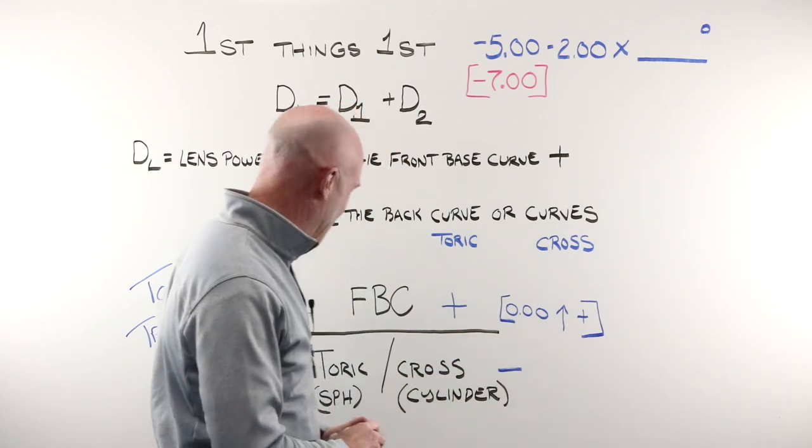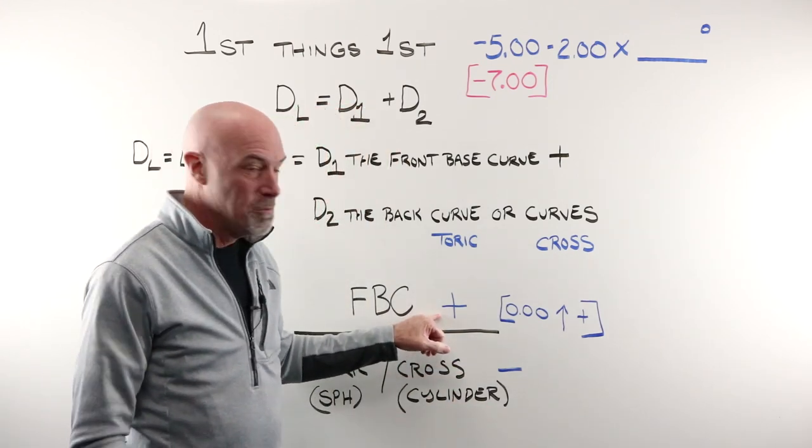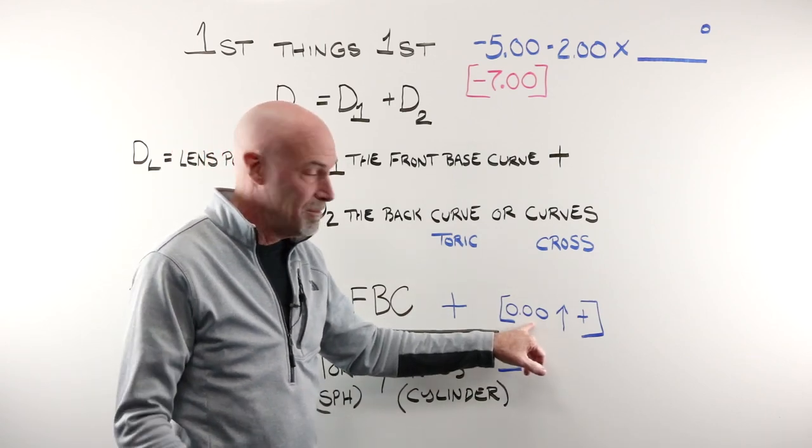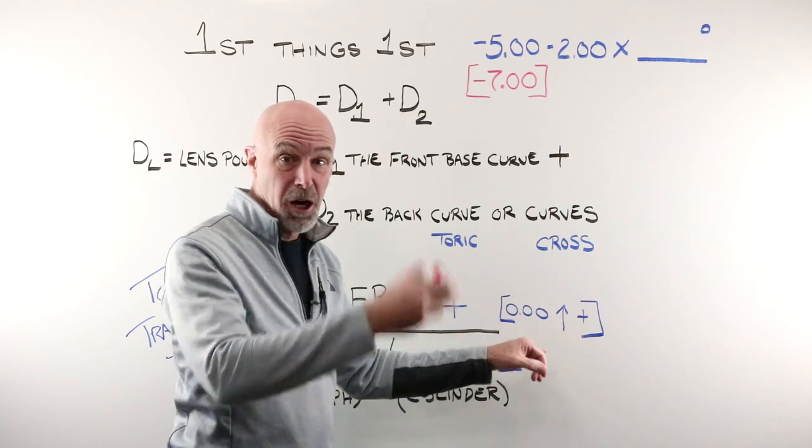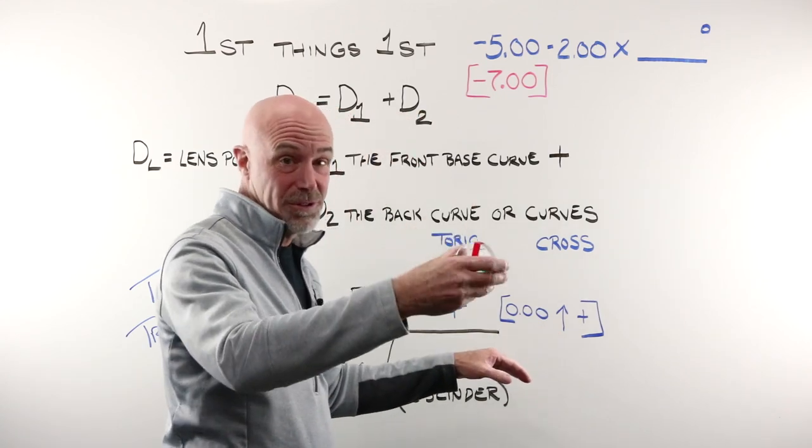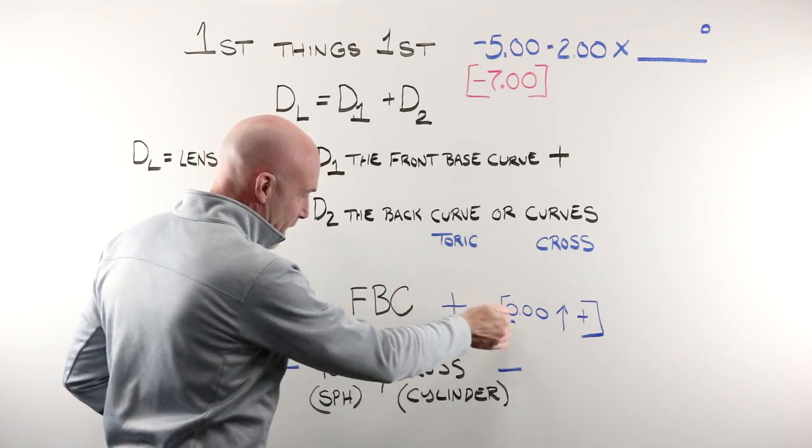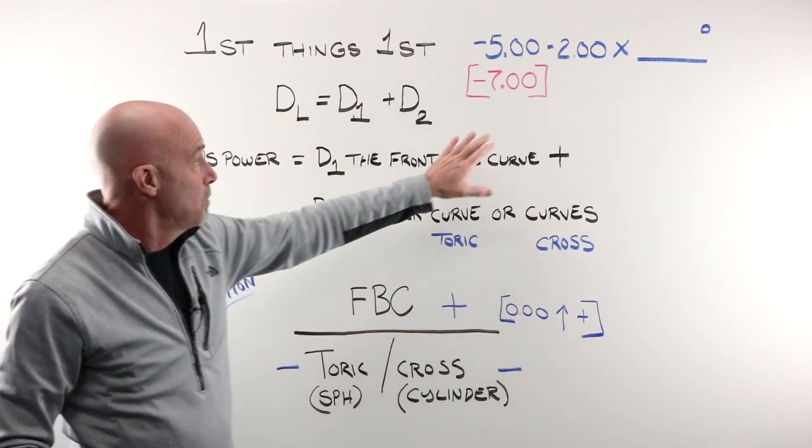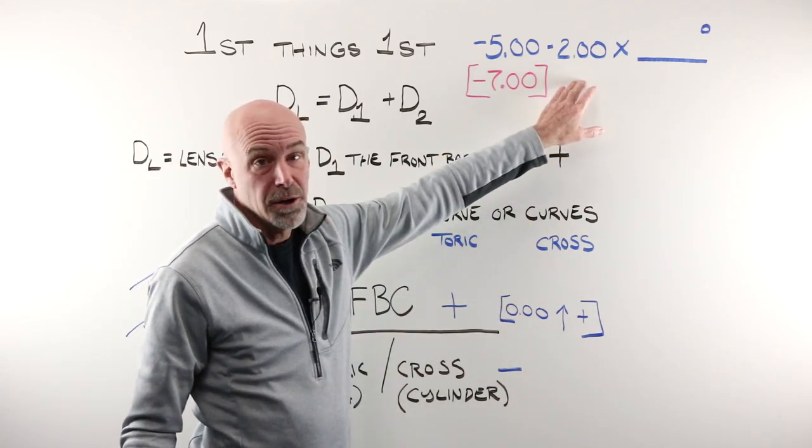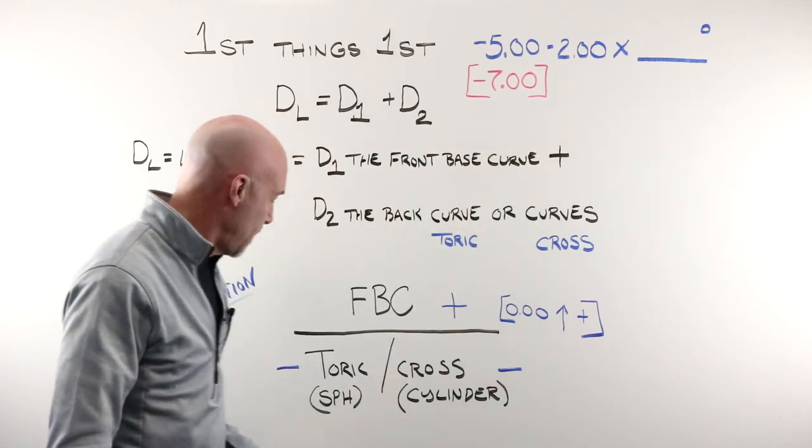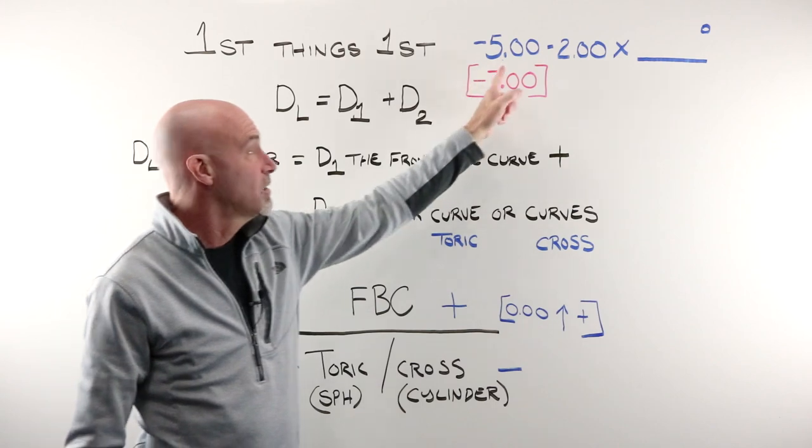We're gonna have four installments. If my front base curve, it is always going to be a plus. It'll be either plano for a super high minus, or going up to five, 50, 75, one in the plus. It's gonna have that convex shape. And then, depending on the powers required for the lens that has been ordered, I'm going to have to grind some curves on the back to create them.